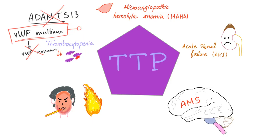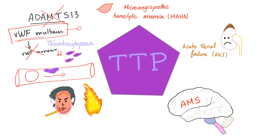Speaking of thrombosis, you get platelet microthrombi, which will lead to consumption of platelets and thrombocytopenia. And while the red blood cells are trying to pass through the platelet microthrombus, the red blood cells will get sheared into schistocytes and they will get destroyed — called hemolysis. This is microangiopathic hemolytic anemia, because it happens inside small blood vessels. We can also have acute renal failure, although this is rare in TTP. We get fever and neurological symptoms, usually altered mental status.